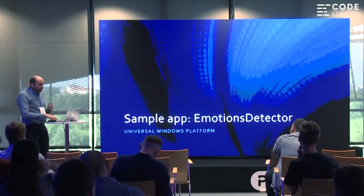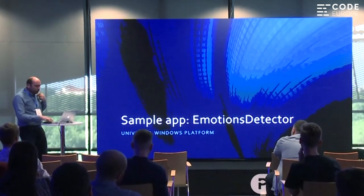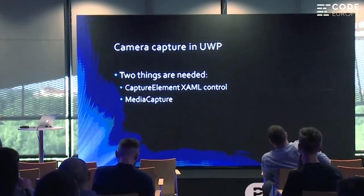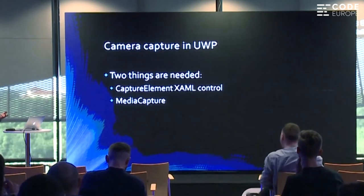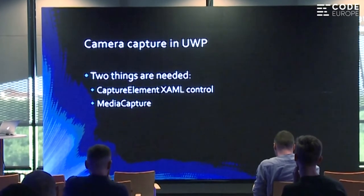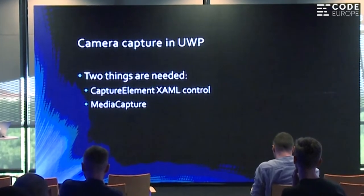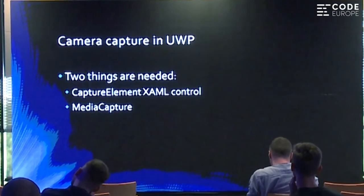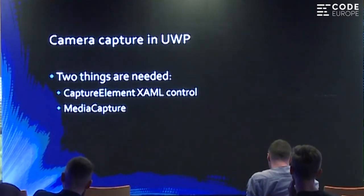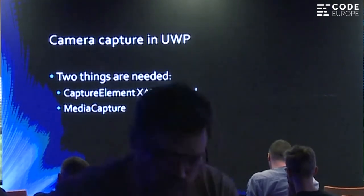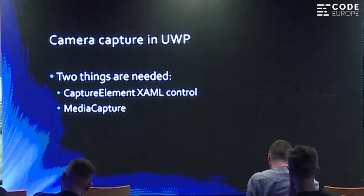The sample app I built with this Emotions Cognitive Service uses the Universal Windows Platform. To capture the image in Universal Windows Platform, you need just two things: the capture element, which is a XAML control, and the media capture class. The control displays the images you acquire, and the media capture is responsible for all the logic which physically acquires images from the camera.